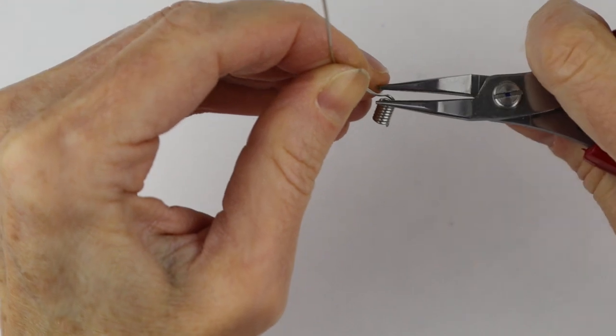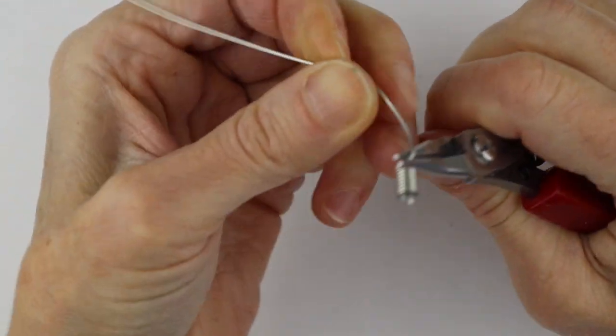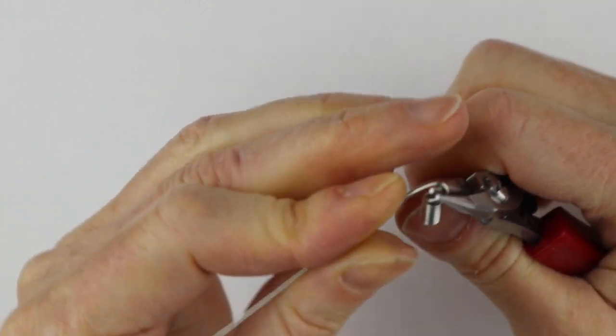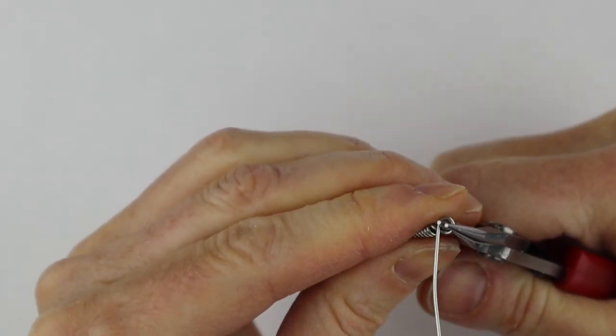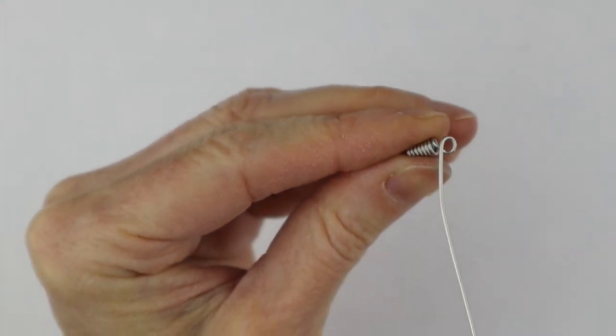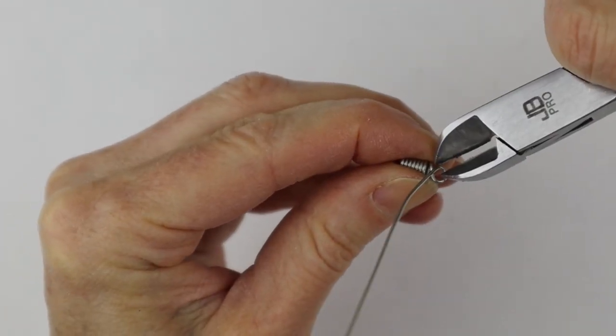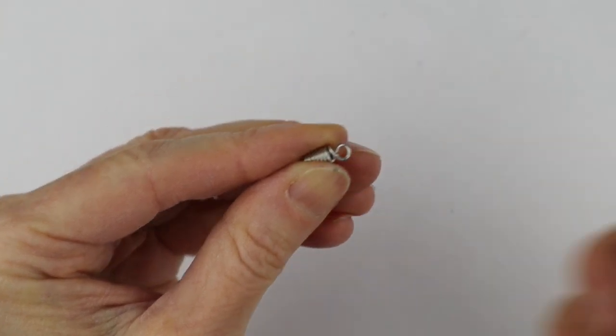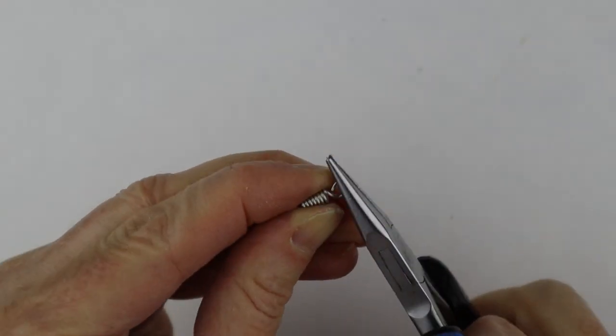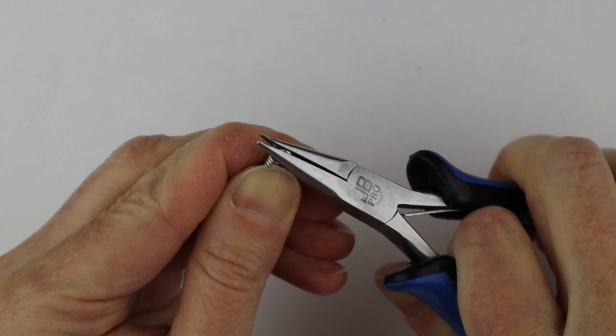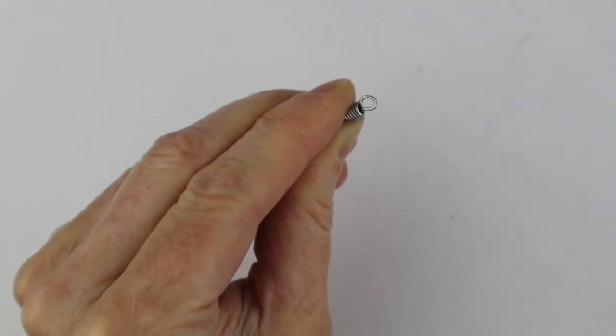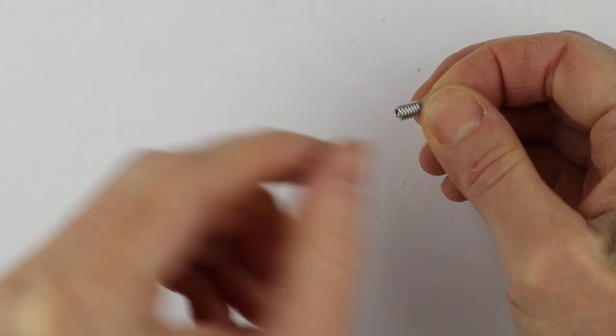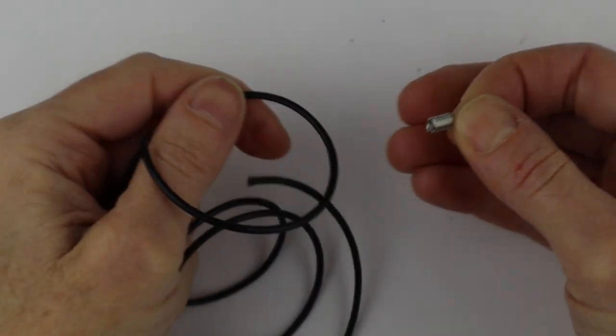Take your round pliers and form a loop. You're going to form your loop on the end and then cut it here, bend that in, and then center it at the top of the ring. So there you have your cap for your cord.